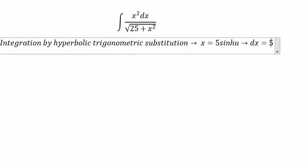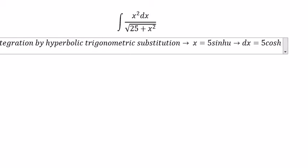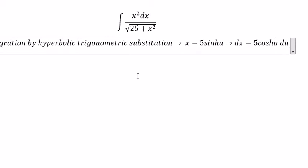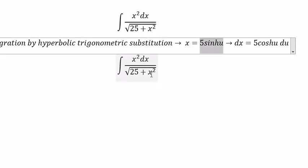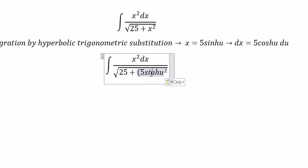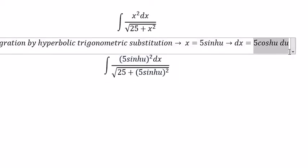Then dx we get 5 cosh u du. So we put this one in here and this one in here. Then we change for this one.